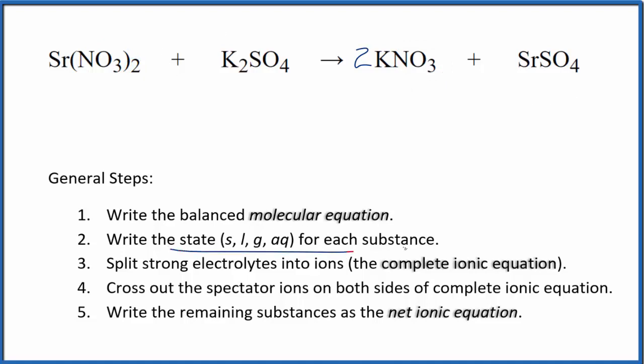Now we can write the states for each substance. If you know your solubility rules, nitrates here are very soluble. So this is going to be aqueous, dissolved, dissociated into its ions. Sulfates in general are soluble, and potassium compounds are very soluble. We'll put an aqueous here, and then we have another nitrate, so that's going to be aqueous.